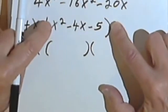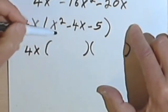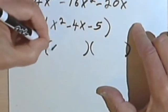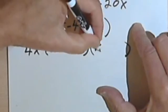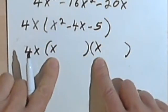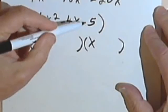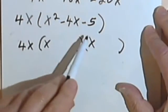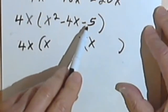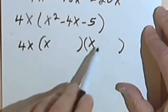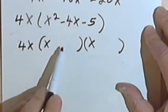Okay. Looking at this polynomial, I've got an x squared as the first term, so that means my binomials will each begin with an x. I've got a negative sign for my third term. That means that the signs in my binomials are going to be different. One will be positive, one will be negative.